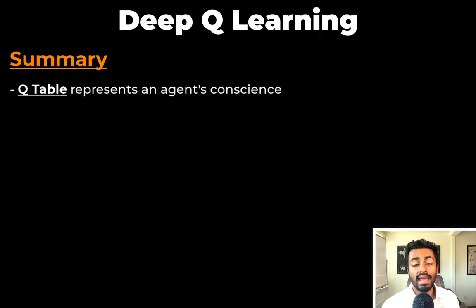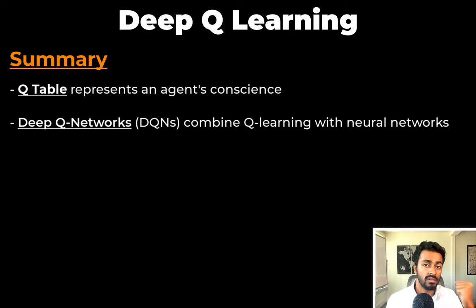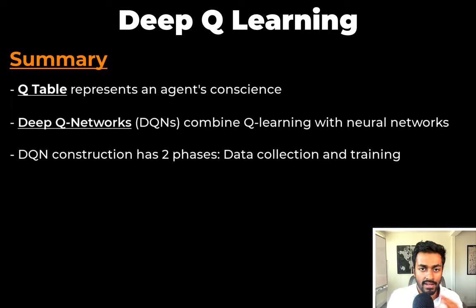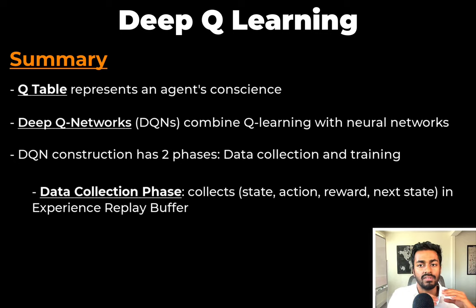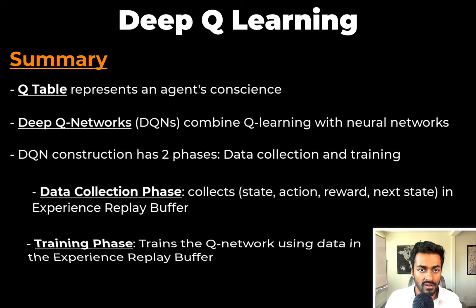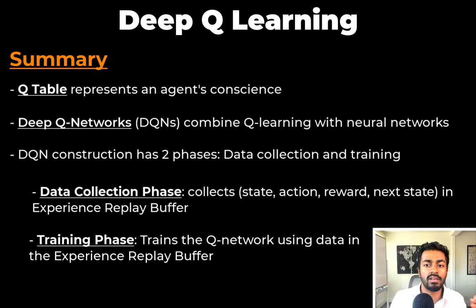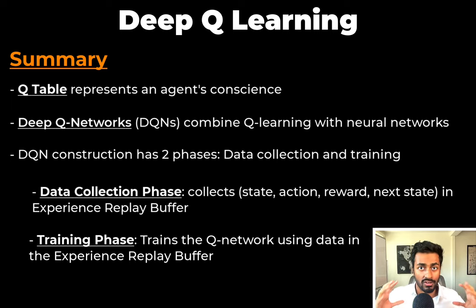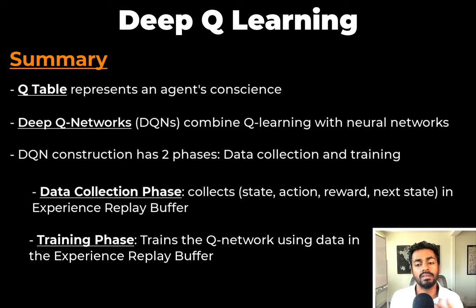Let's get a summary of the video. A Q-table represents an agent's conscience. Deep Q-networks combine Q-learning with neural networks. DQN construction has two phases: a data collection phase and a training phase. The data collection phase collects independent quadruples of experiences stored in the Experience Replay Buffer. The training phase trains the Q-network using data from the Experience Replay Buffer. If you want to know more about the raw Q-learning algorithm, check out my other video. Thank you all so much for watching — please consider liking the video, and I will see you in the next one. Bye-bye!